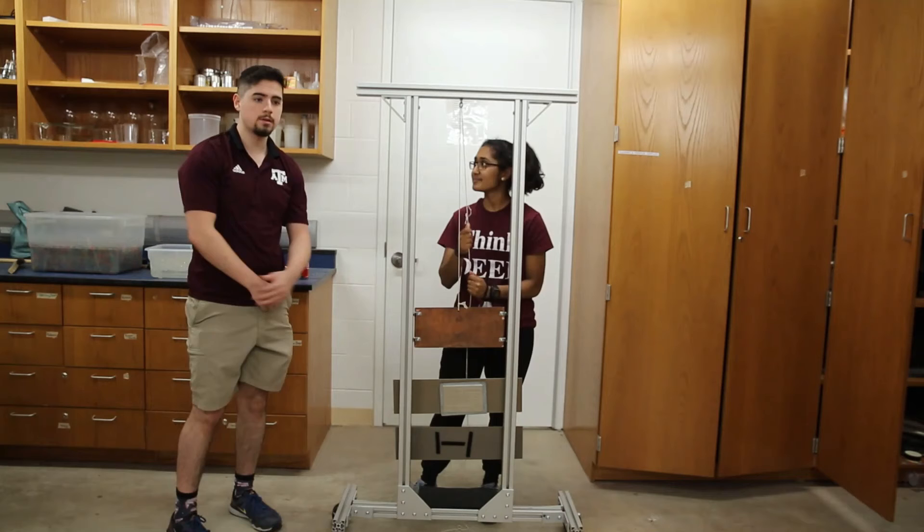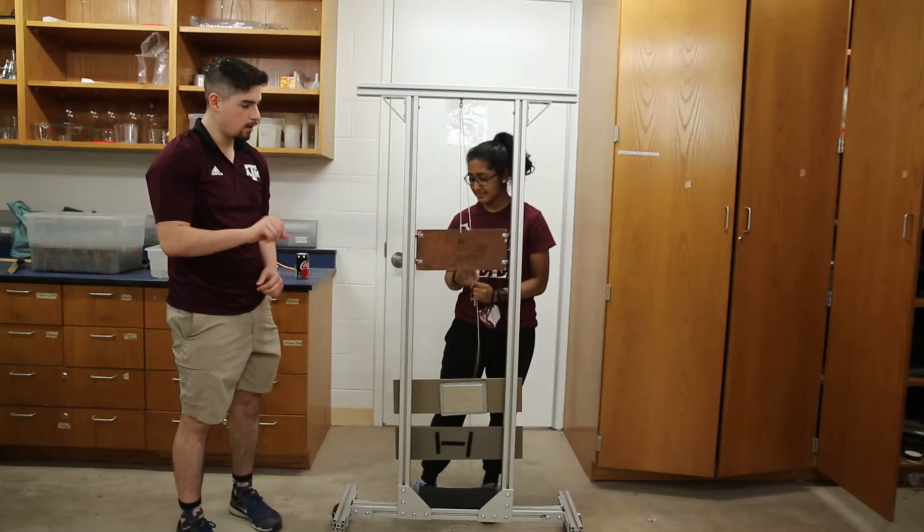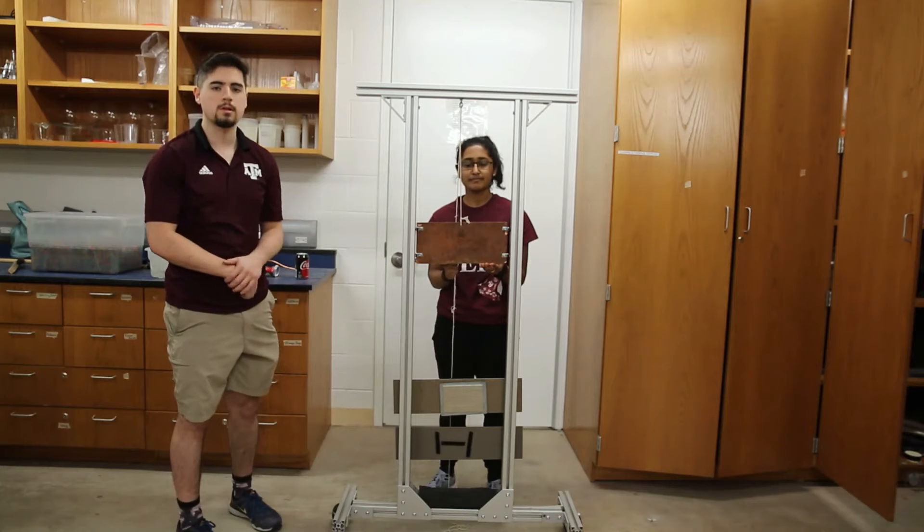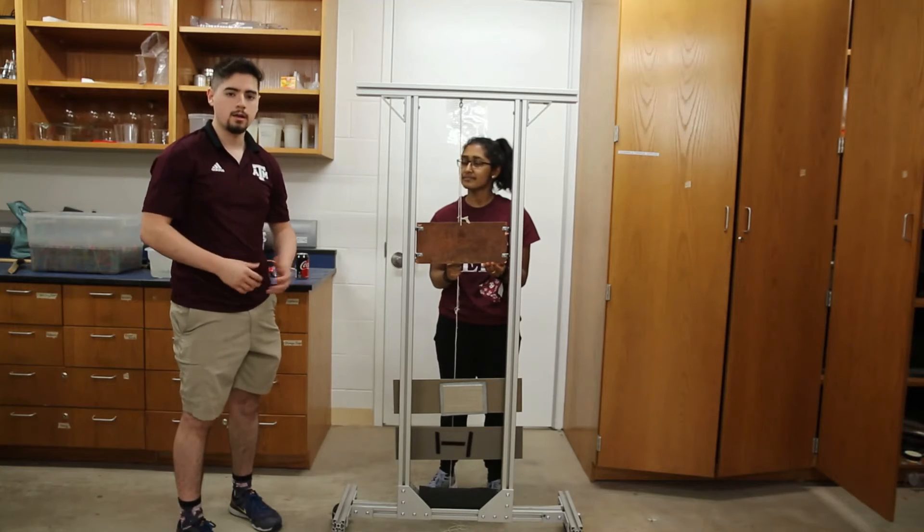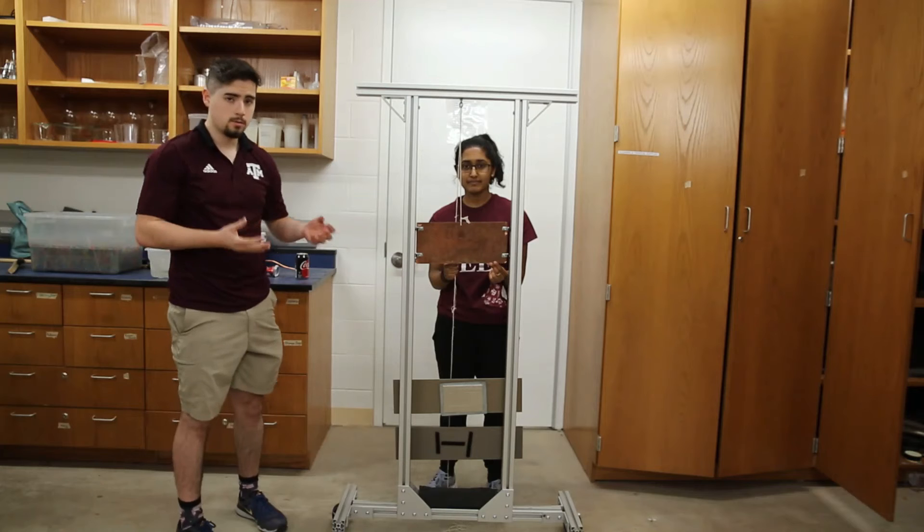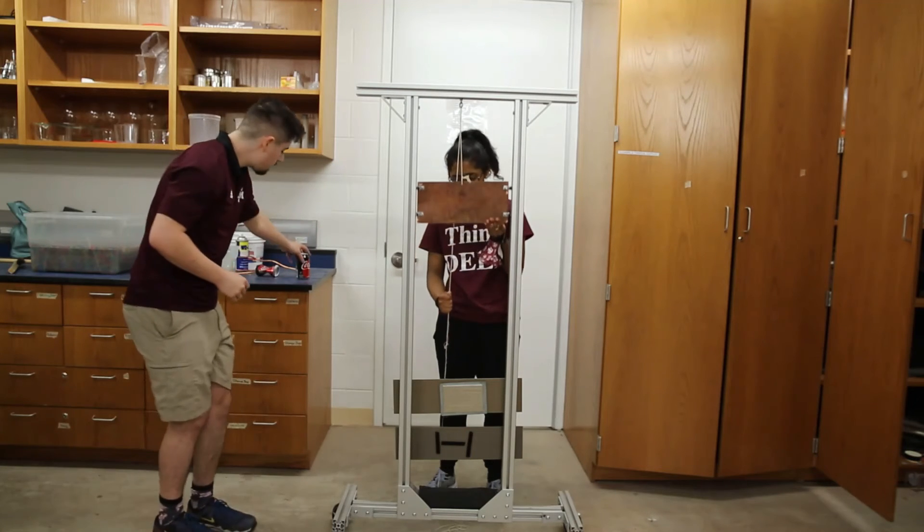And those little currents, called eddy currents, are in a direction such that the resulting magnetic field contribution from those currents impose a drag from the Lorentz force on the system, which slows it down. And so we're going to demonstrate this here.